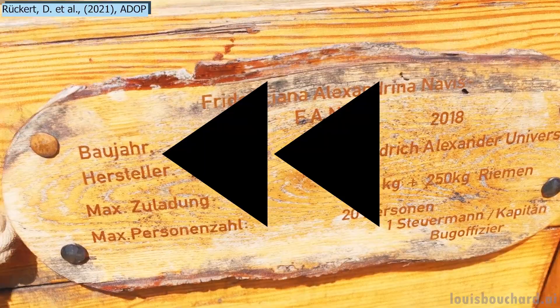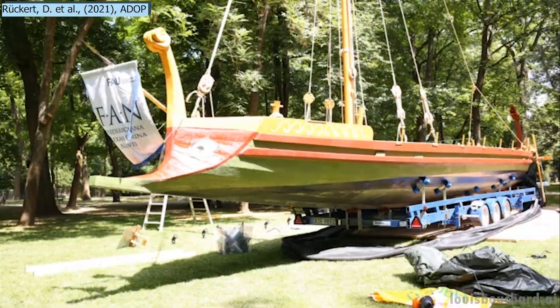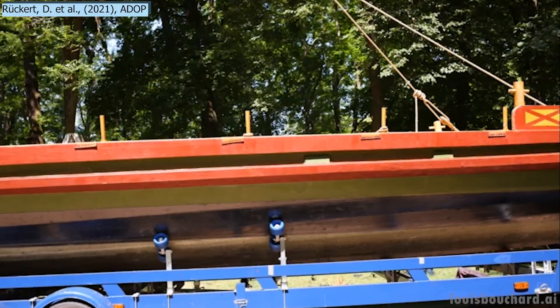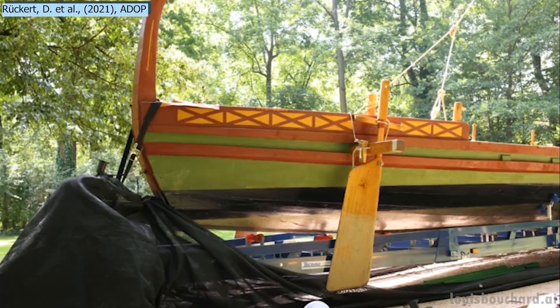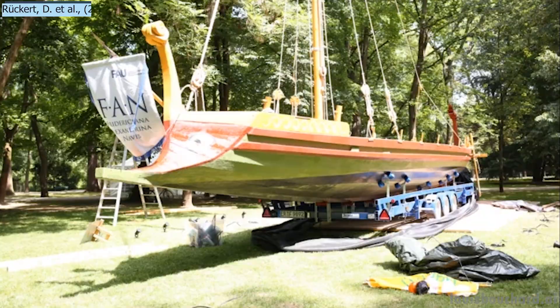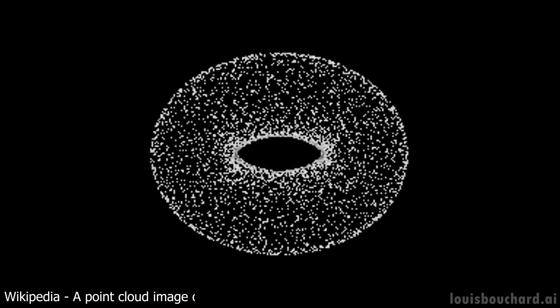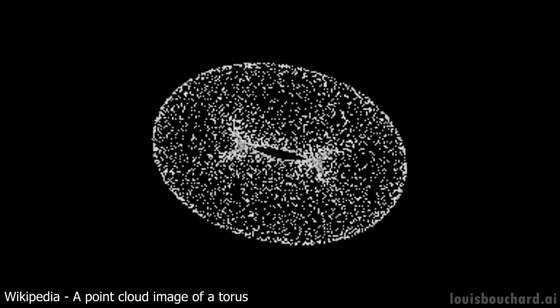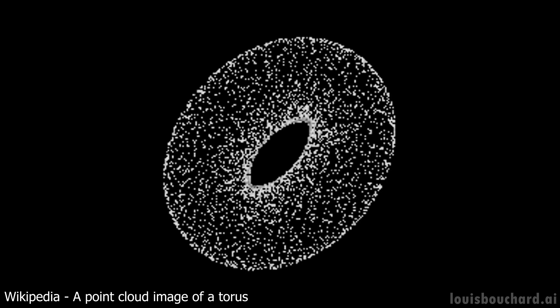Imagine you want to generate a 3D model out of a bunch of pictures you took like these ones. Instead of only using these pictures, you will also need to feed it a point cloud. A point cloud is basically the simplest form of a 3D model — you can see it as a draft version of your 3D model, represented by sparse points in 3D space, that looks just like this.